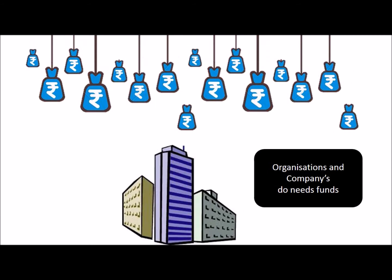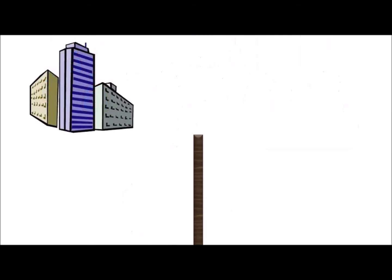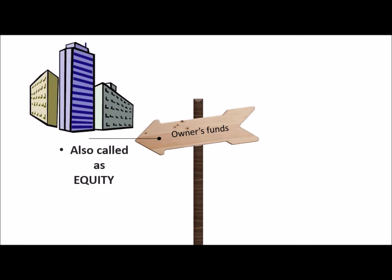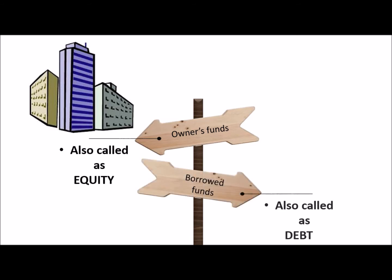Like Mr. Avinash, organizations and companies also need funds for their operations. Companies also have two options: one is owners funds, which is called equity, and the other is borrowed funds, which is called debt.